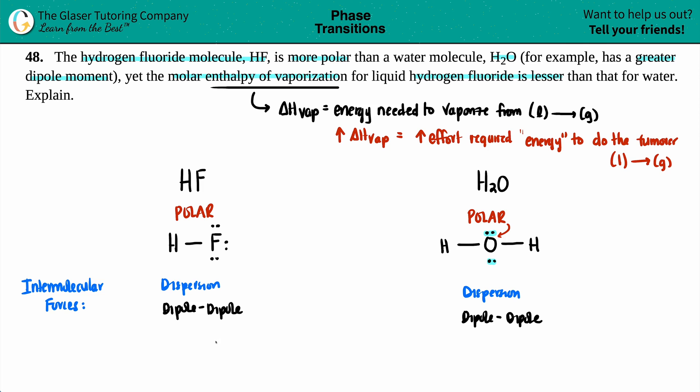Now we come to the last intermolecular force, which is the hydrogen bond. And a hydrogen bond only happens with three bonds: an HF bond, an HO bond, and an HN bond. And clearly we have them both in here. We have an HF bond.